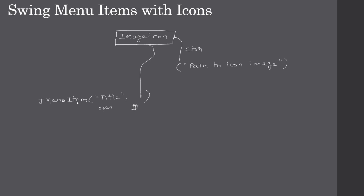Once the JMenuItem is created, the procedure is the same as in the previous video — you add it to the JMenu. It's just a two-step process: first prepare your icon image file and place it in a folder, then construct the ImageIcon. After constructing the ImageIcon, construct the JMenuItem passing the icon to its constructor, then add the JMenuItem to the JMenu. The JMenu will be part of JMenuBar, and JMenuBar gets added to the frame or dialog — the top-level container.